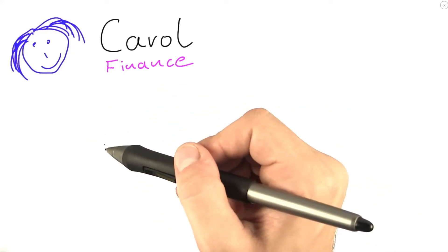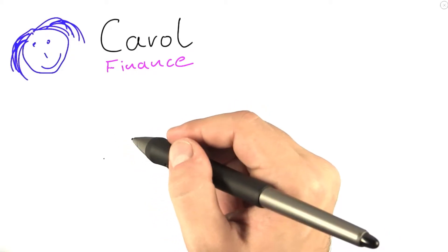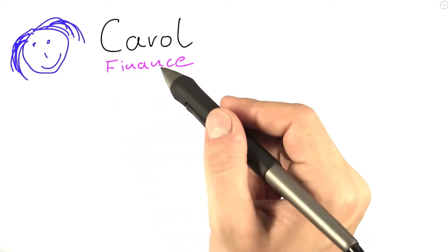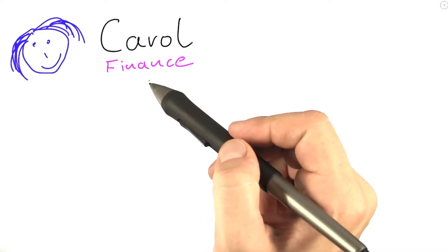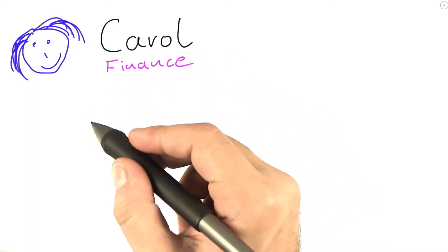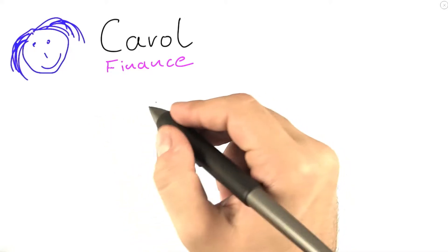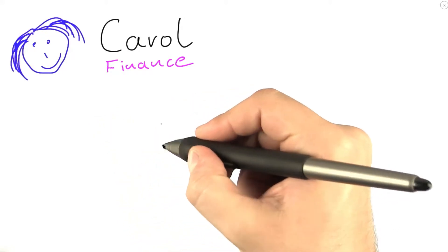So given recent market turmoils, her employer has asked her to come up with an algorithm that will help them design a secure portfolio of investments. So the problem that Carol is looking at is actually quite similar to the one that Bob is looking at. She is looking at a number of investment opportunities for a company.